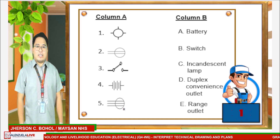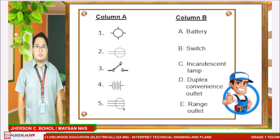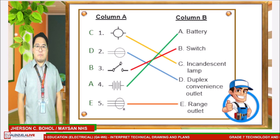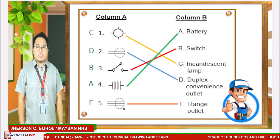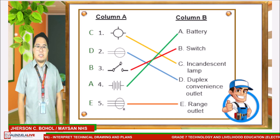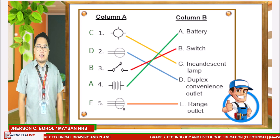Let's check your work. Answers: for number one, it's letter C. For number two, it's letter B. For number three, it's letter B. For number four, it's letter A. And for number five, it's letter E.